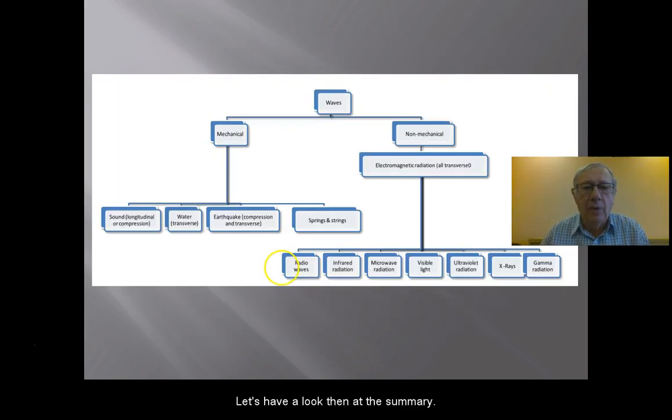Let's have a look then at a summary. So all of our waves then can be grouped as either mechanical or non-mechanical. Our non-mechanical waves here are all electromagnetic radiation. Those forms of electromagnetic radiation are radio, infrared, microwave, visible, ultraviolet, x-rays, and gamma rays.